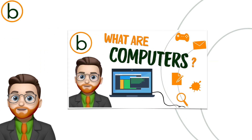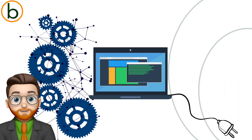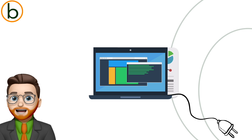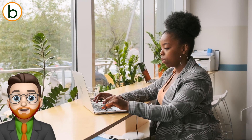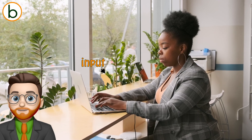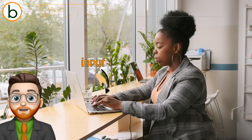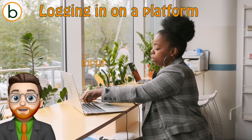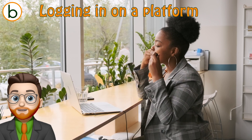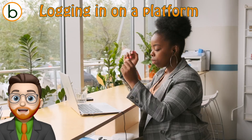As you learned in the previous video, a computer is an electronic device that processes data into information. But how does it actually do that? Everything starts with the things that you input — the data you give to the computer to process. For example, when you type your password on a keyboard, your keystrokes are processed by the computer, resulting in you logging into your account.